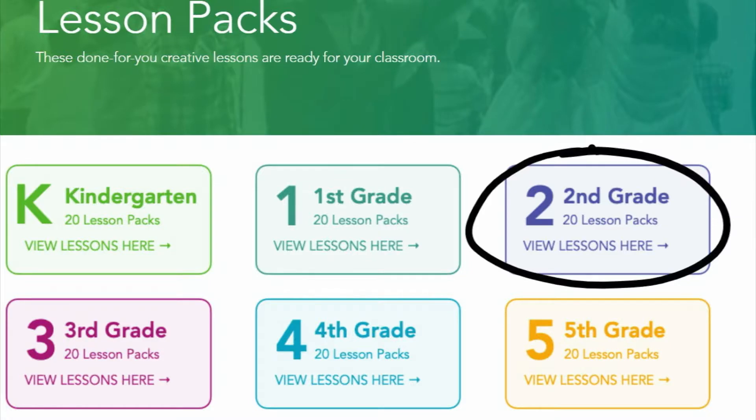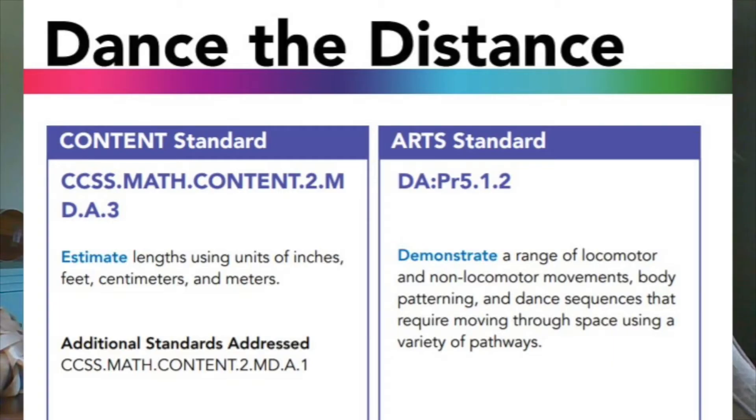This activity can be found in the accelerator within the second grade lesson pack. Although it was written for second grade standards, third grade classrooms could use this to bridge second grade learning to third grade. If you look at the standards alignment, students are being asked to estimate lengths, demonstrate movements, body patterning, and dance sequences that require moving through space in a variety of pathways. These standards are very appropriate for all grade levels.